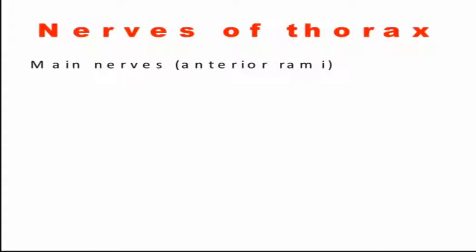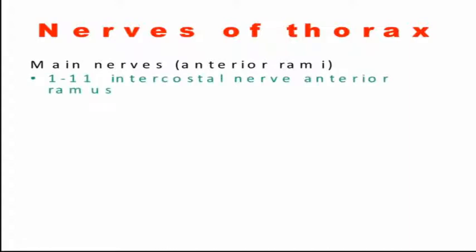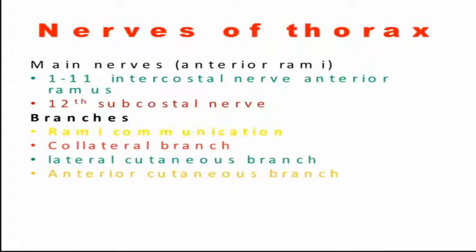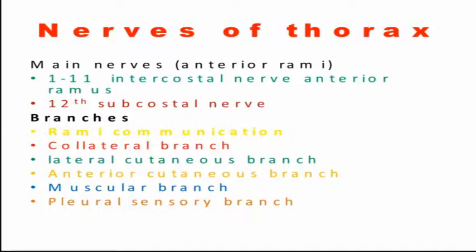Nerves of the thoracic region arise mainly from the anterior rami, which are the first to 11th intercostal nerves and 12th intercostal nerve. These have branches which include collateral branches, lateral cutaneous branch, anterior cutaneous branch, muscular branch, pleural sensory branch, and peritoneal sensory branch.